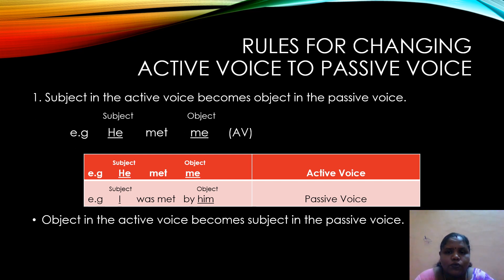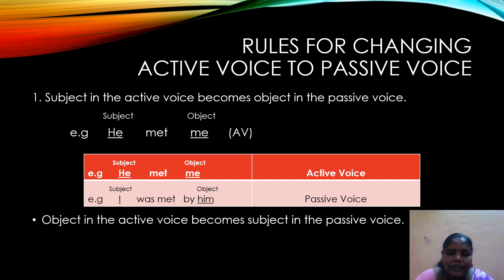Let us slowly move into the rules for changing active voice to passive voice and vice versa. The first rule is that the subject in the active voice becomes the object in the passive voice. For example, in 'He met me,' the subject 'he' becomes 'by him' and the object 'me' becomes 'I,' the subject in the passive voice. So the object in the active voice becomes the subject in the passive voice.